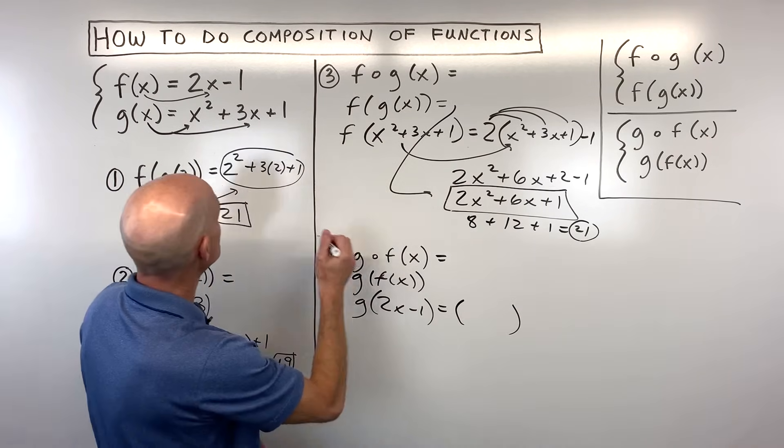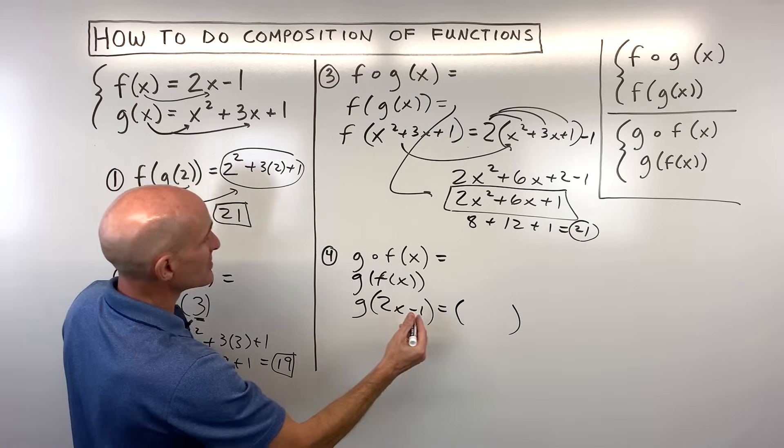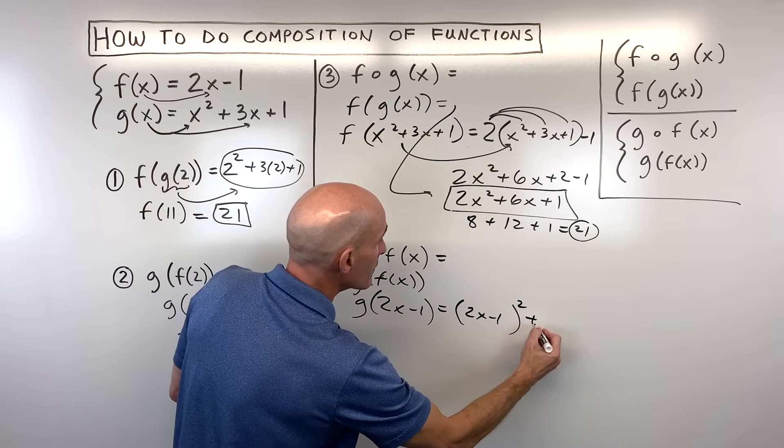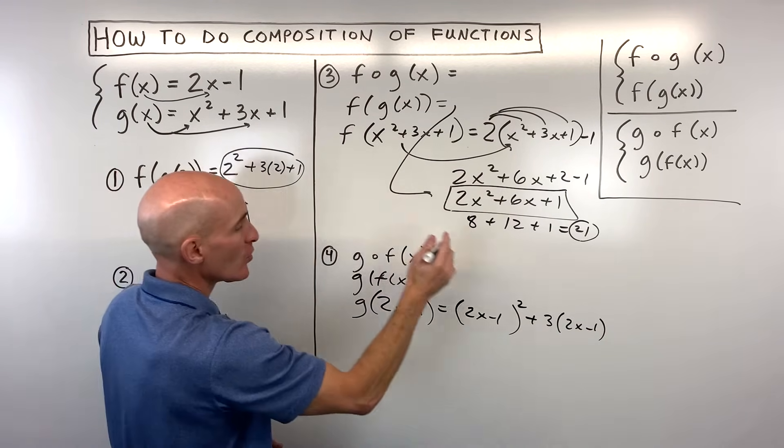So instead of x we're putting this quantity in for x so this is going to be 2x minus 1 squared plus 3 times 2x minus 1 plus 1.